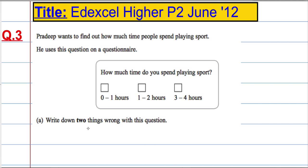In question 3, we are told that Pradeep wants to find out how much time people spend playing sport and uses this question on a questionnaire: 'How much time do you spend playing sport? 0 to 1, 1 to 2, 3 to 4 hours.' Write down two things wrong with this question.